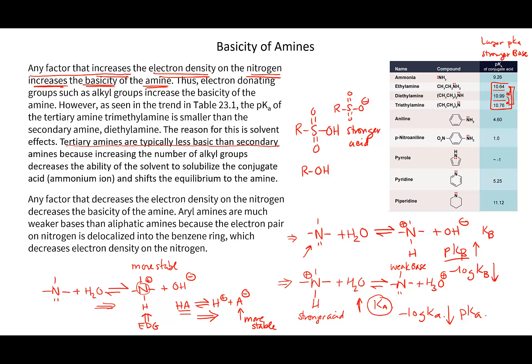The corollary is: any factor that decreases the electron density on the nitrogen decreases the basicity of the amine. Now let's look at aniline. Aniline has a much smaller pKa of the conjugate acid, so aniline is barely basic.